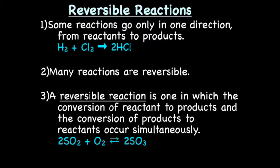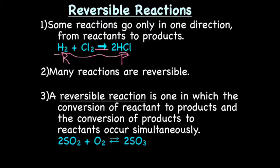Before we talk about equilibrium, we need to discuss reversible reactions. First, let's talk about non-reversible reactions. Some reactions only go in one direction, from reactants to products, like H2 plus Cl2, which gives us hydrochloric acid, or HCl. We know that these are the reactants and these are the products because the arrow tells us so. This is the kind of reaction we've seen most of the time.